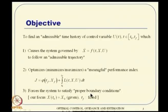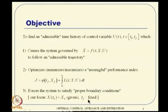It also has to force the system to satisfy certain boundary conditions. So our objective is to find a control trajectory in this domain such that it gives an admissible state solution, it will minimize or maximize a cost function, and it will satisfy certain boundary conditions - both initial and final conditions. It falls in the framework of calculus of variation because this is a path-dependent optimization with a dynamic system involved.